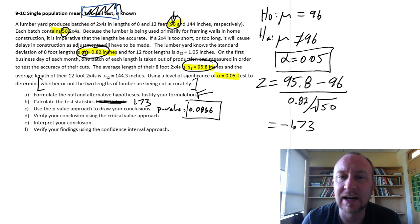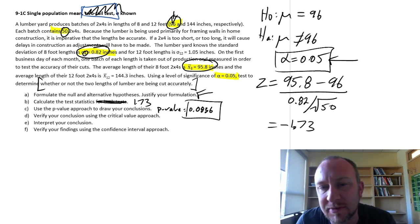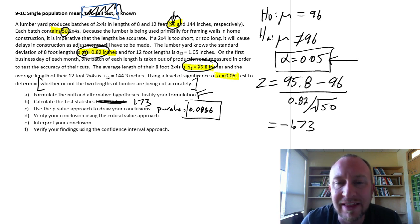I could reject, but I'm not comfortable with an 8% chance of committing a type 1 error. I'm only comfortable with a 5% chance of committing a type 1 error. So with that in mind, I am not going to reject.